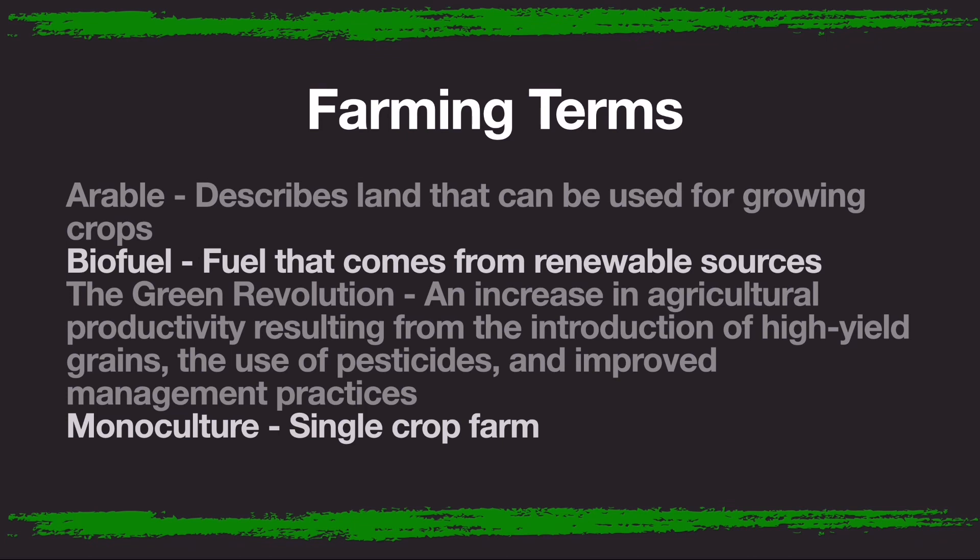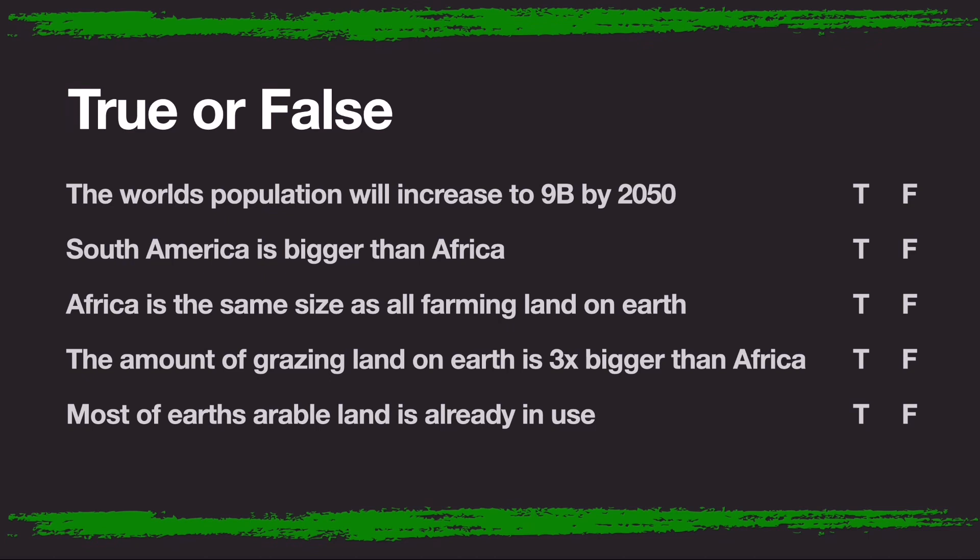Monoculture: a single crop farm. Now we get to play true or false. First question: the world's population will increase to nine billion by 2050.